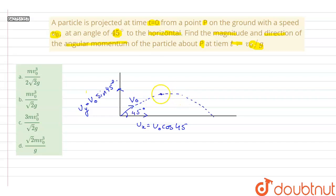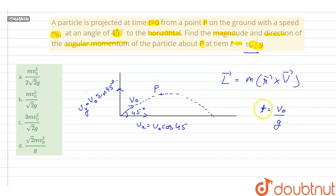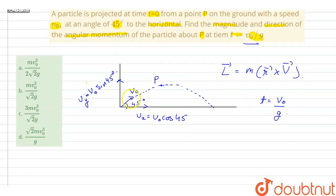Let us say point P is at the origin. We have to find the angular momentum, which is given by m times r cross v. We need to find the angular momentum at time t equal to v0 by g, so we must find the position and velocity of the particle at that time and then take their cross product.